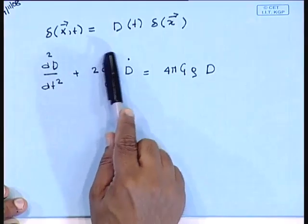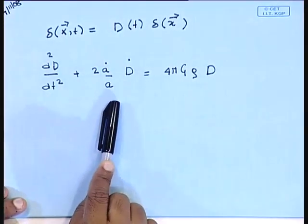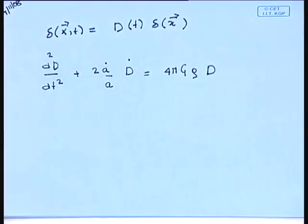If you are interested in structure formation, it is the growing mode that is of importance. The next thing we started discussing was how to calculate the growing mode and decaying mode for an arbitrary cosmological model. The background model enters through the Hubble parameter H, which differs from model to model.